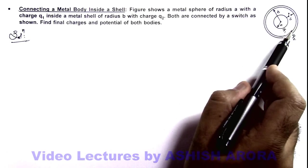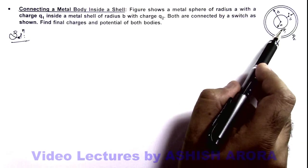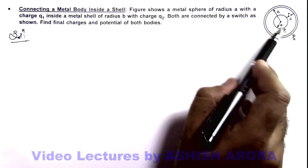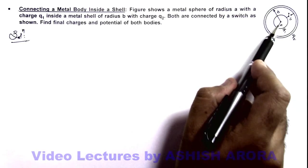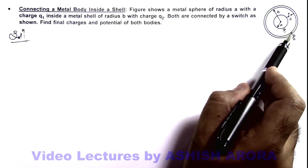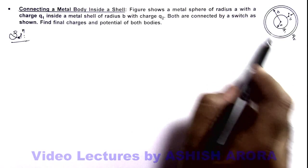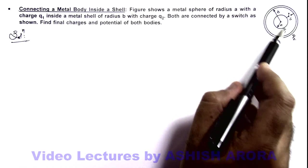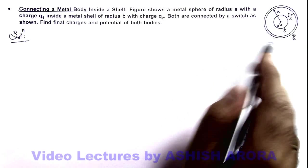Because if it is having some charge, it'll produce potential due to its own charge plus it'll have the same potential due to the outer charge which is on the shell. So it'll always be at higher potential if the inner body is having some charge.